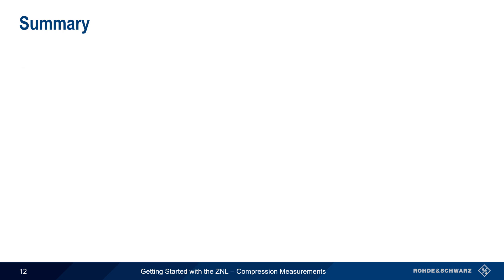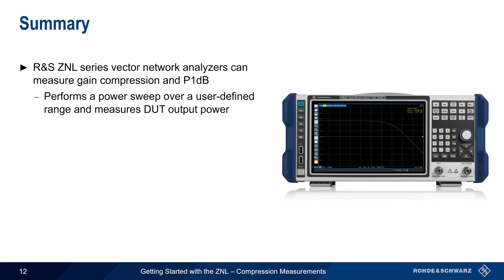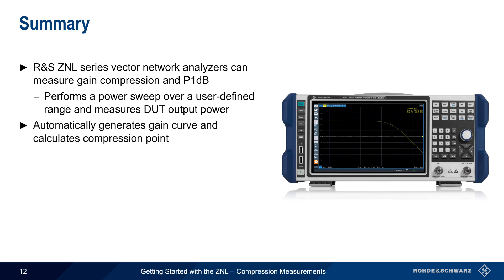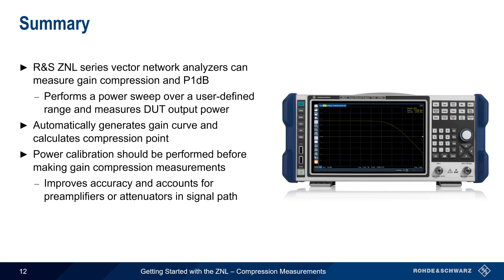Let's end with a brief summary. Rohde & Schwarz ZNL Series Vector Network Analyzers can quickly and easily measure gain compression and calculate compression points. This is done by performing a power sweep over a user-defined range on one port, and measuring the DUT output power on the other port. Using this information, the ZNL automatically generates a gain versus input power curve and calculates the compression point. A special power calibration should be performed before making gain compression measurements, because this both increases measurement accuracy and can also be used to take into consideration any gain or loss in the signal path.